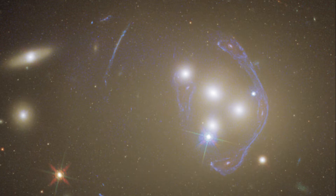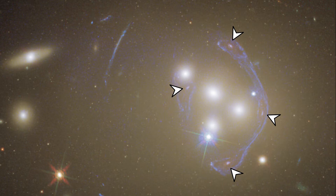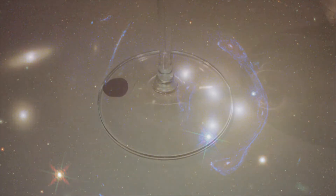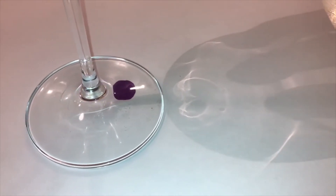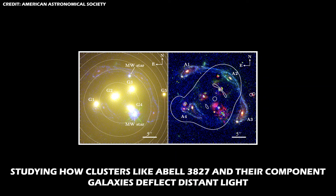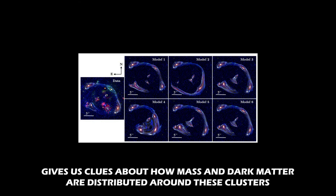The background spiral galaxy, along with its bright yellow central bulge, appears in nearly four separate locations. As the light from the background galaxy passes through the space around the cluster, it takes multiple paths through the complex gravity of the cluster — just like a single distant light can take multiple paths through the stem of a wine glass. Studying how clusters like EBL 3827 deflect distant light gives us clues about how mass and dark matter are distributed around these clusters.